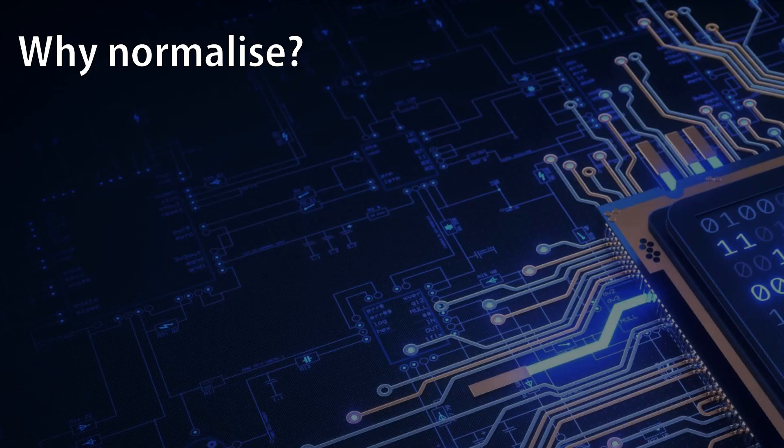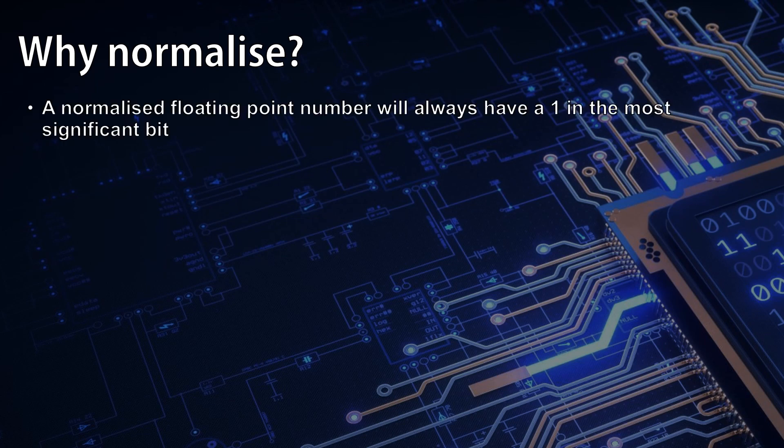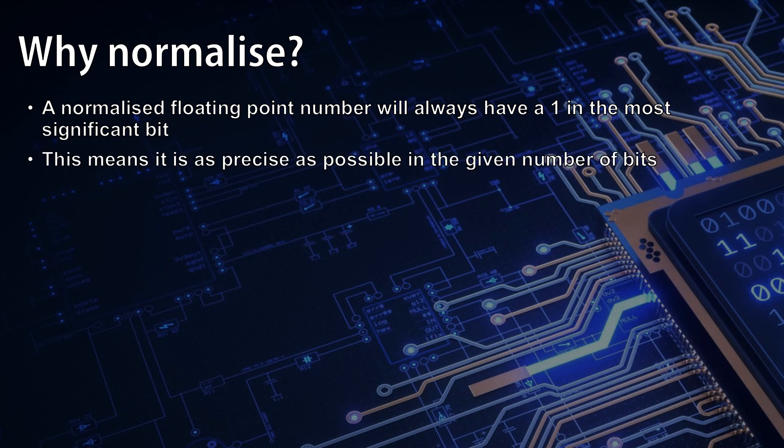A normalized floating point number will always have a 1 in its most significant bit, whether this is the sign bit if it's negative or the first positive bit if it's a positive number. This means the number will be as precise as possible in the given number of bits that we have for the mantissa.